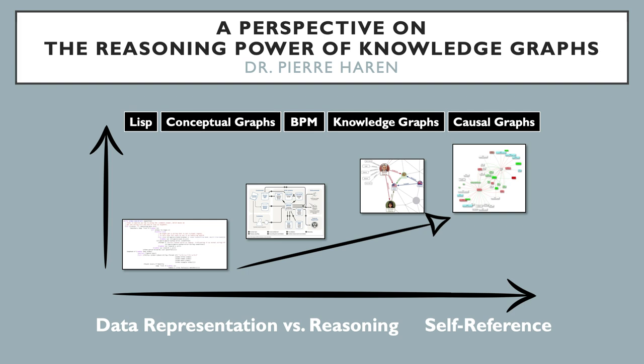I will develop two fundamental ideas. The first one is that data representation and computing on this data are two faces of the same coin. The second one is from Douglas Hofstadter's Gödel, Escher, Bach book: intelligence is all about self-reference and the ability to reason about your own reasoning. Combining these two ideas provides an interesting compass to navigate the intertwined history of AI and knowledge graphs, from LISP to business process management, the current status of knowledge graphs, and causal graphs.